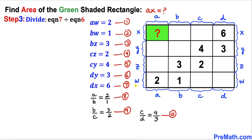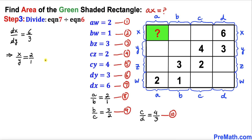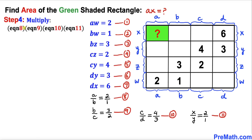Finally, dividing equation 7 by equation 6: dx divided by dy equals 6 over 3. The d's cancel, so we get x over y equals 6 over 3, which reduces to 2 over 1. Let me call this equation 11.